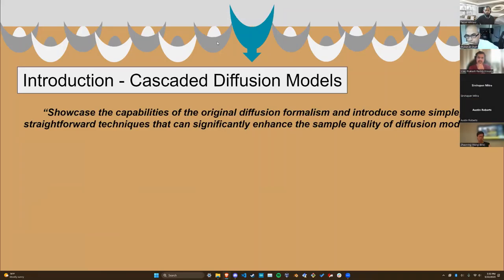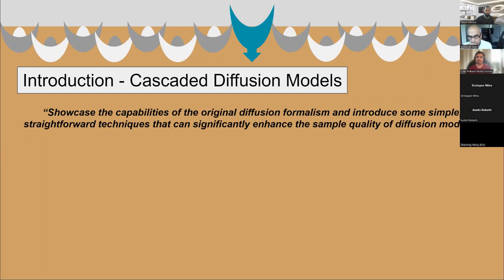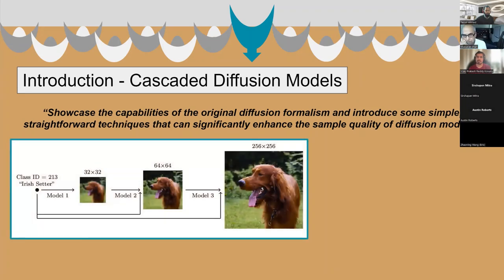Hi everyone. Hopefully this serves as a quick recap of all the things we covered so far today, but I will start off with a little bit of an introduction on the motivation to the paper in addition to the analytical conclusion. The research team wanted to showcase the capabilities of the original diffusion formalism and introduce some simple, straightforward techniques to enhance sample quality of these diffusion models. The basic idea surrounding CDMs is to use the diffusion process to generate a series of intermediate images, each of which contains more detail than the previous, with the model learning to predict the next image based on current images and the noise vectors being applied.